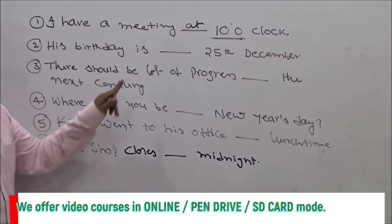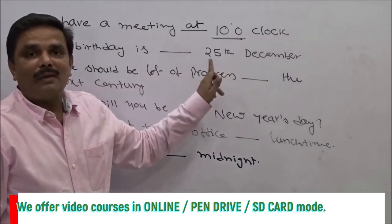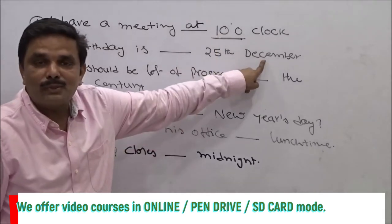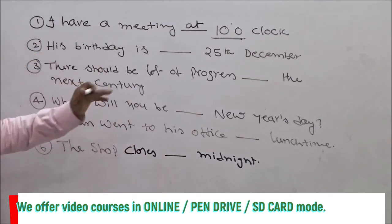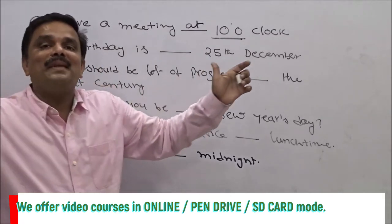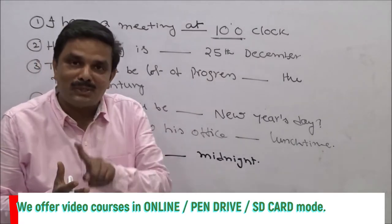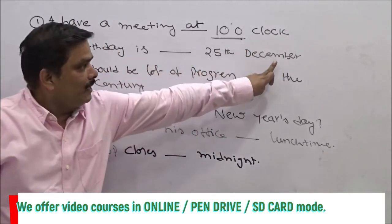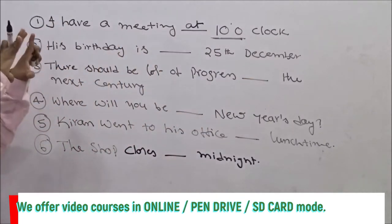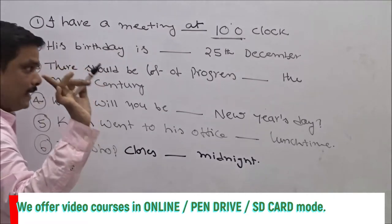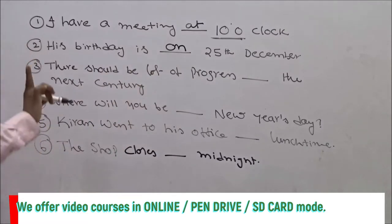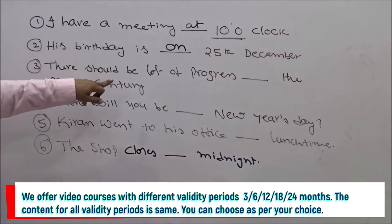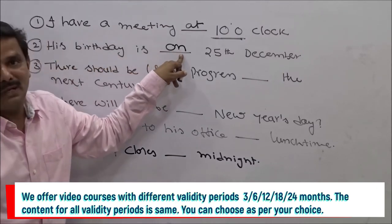'There should be a lot of progress ___ the next century.' Next century is a longer period of time, so: 'in the next century.' 'Where will you be ___ New Year's Day?' A specific day is mentioned, so: 'on New Year's Day.' 'Kiran went to his office ___ lunch time.' Lunch time is a specific time, so: 'at lunch time.' Other examples: 'at midnight,' 'at the sunset,' 'at the sunrise' — for these specific time references, use 'at.'